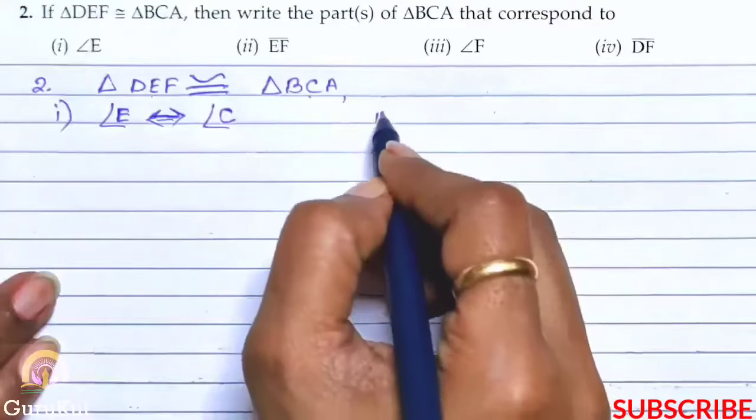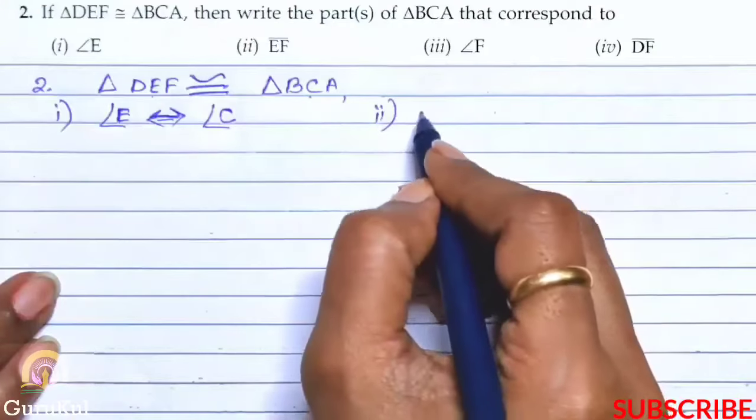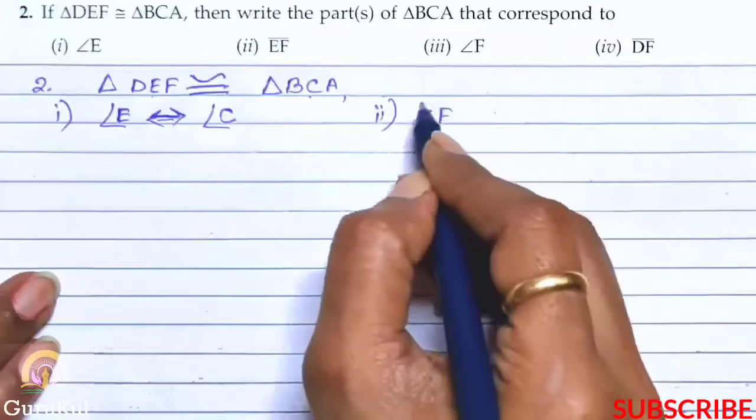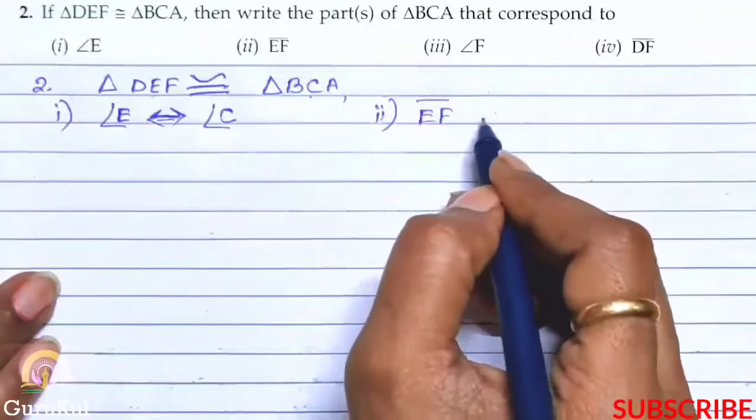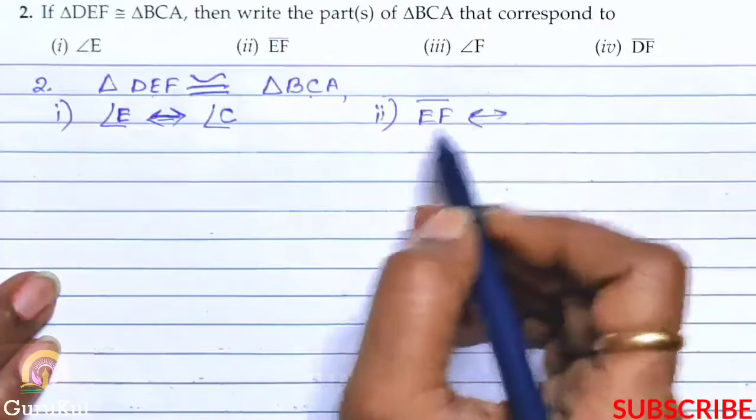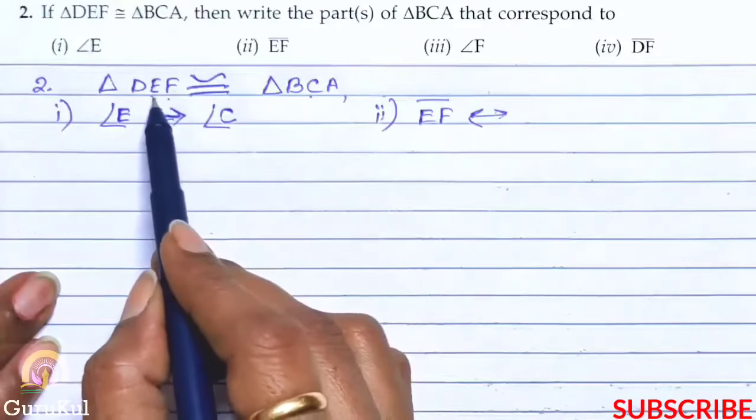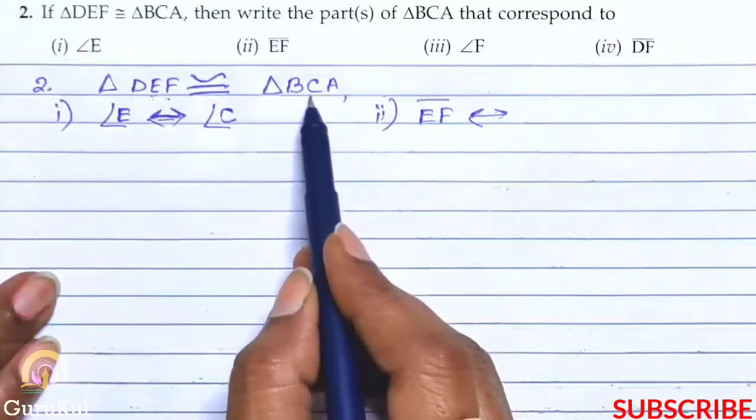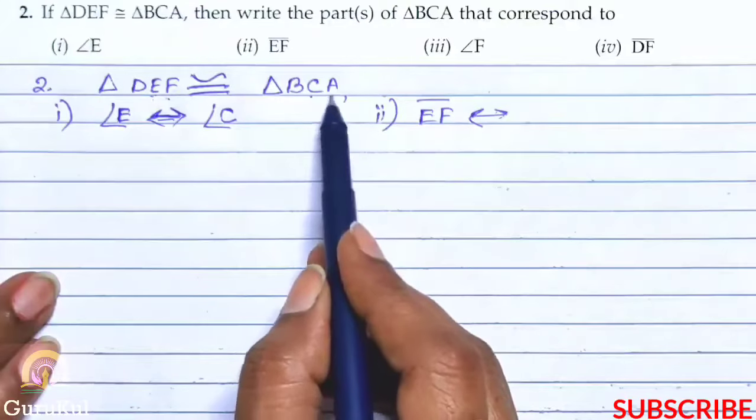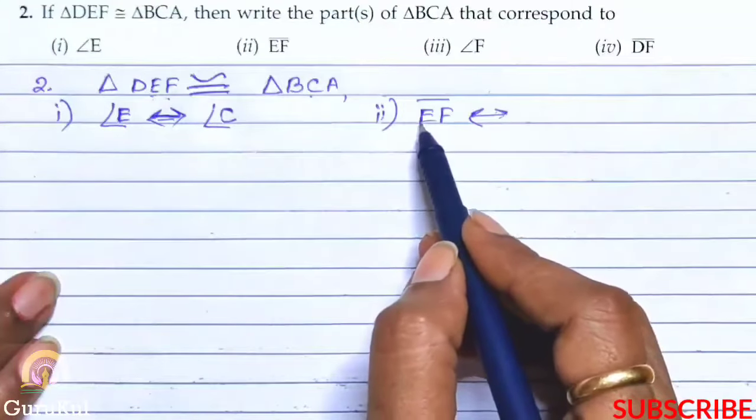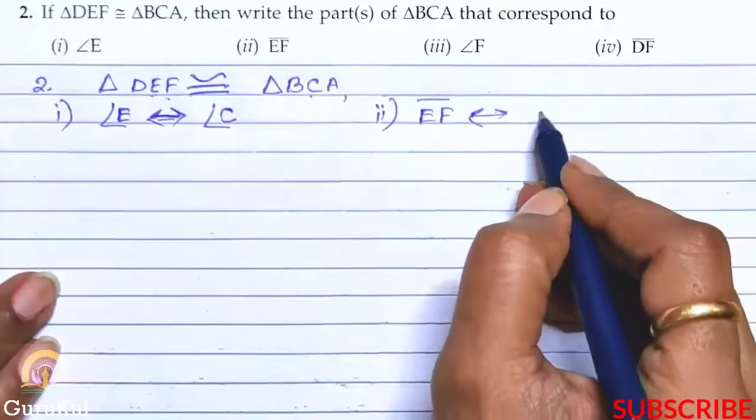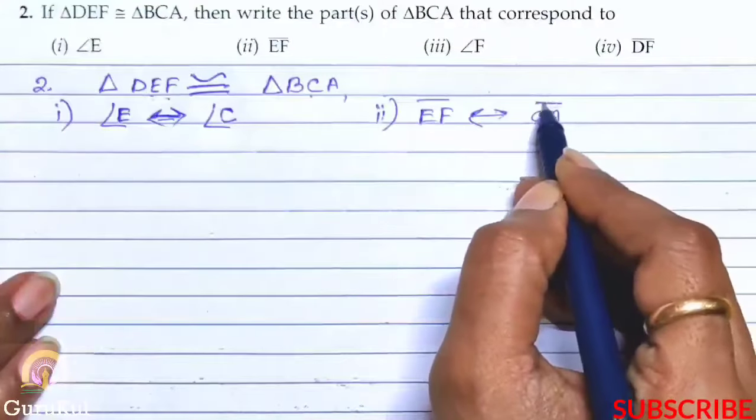Now second one, EF. EF corresponds to what? So this is EF. Look how you identify it. EF, second and third. So what is the second and third here? CA. So line EF corresponds to line CA.